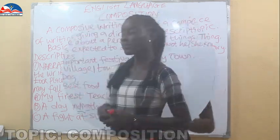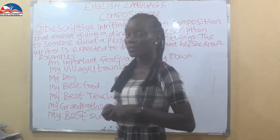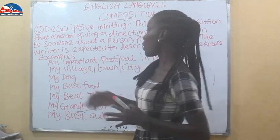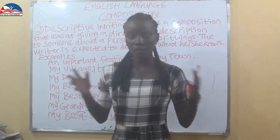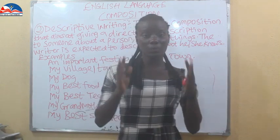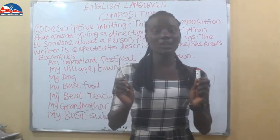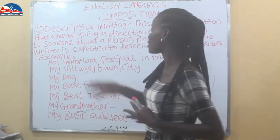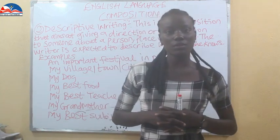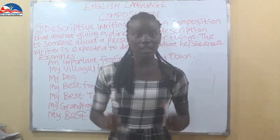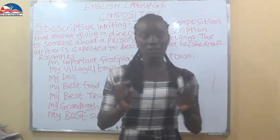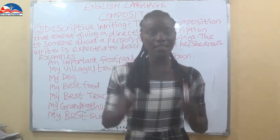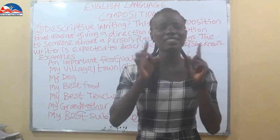Now we are talking about the descriptive composition. This is a composition that aims at giving a direction or description to someone about a person, a place, or a thing. You are trying to describe a person, place, or thing to someone else so the person could have a clear picture about what you are talking about. The writer is expected to describe what he or she knows.